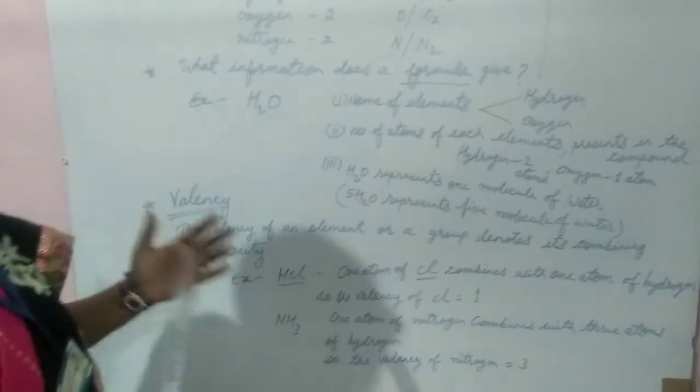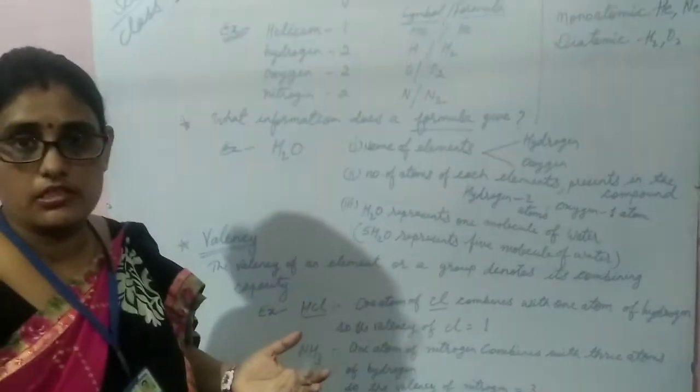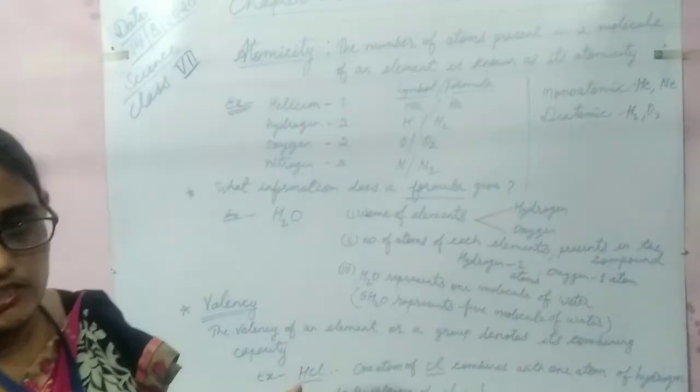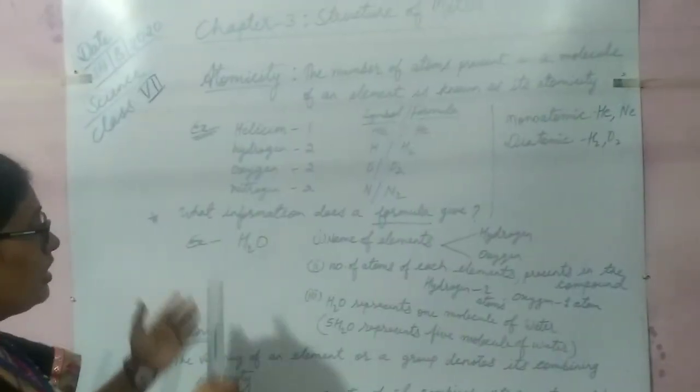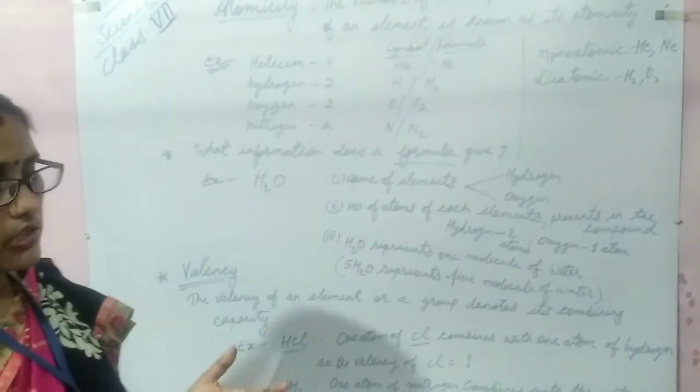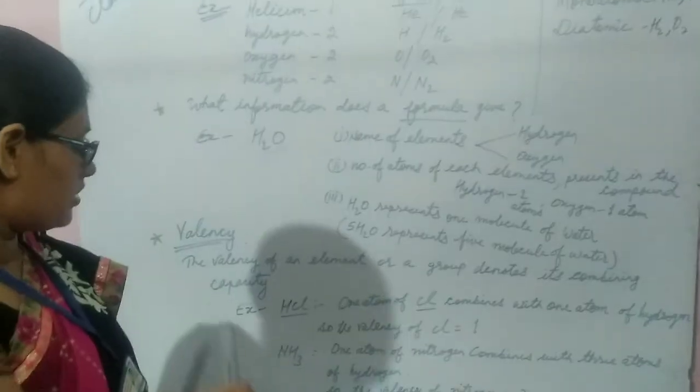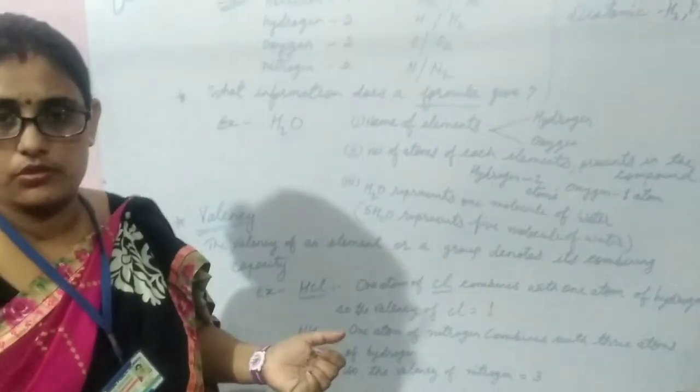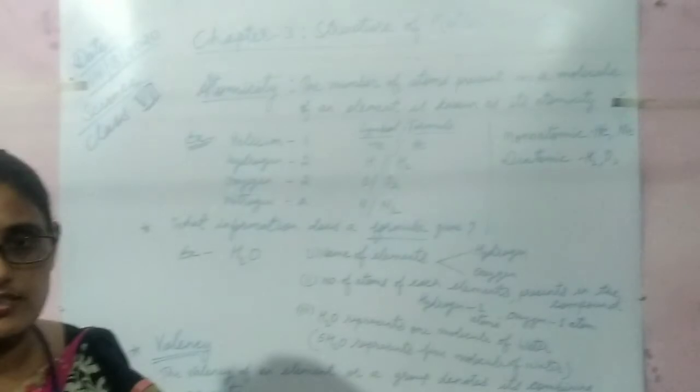So dear students, today I have explained atomicity, monoatomic and diatomic elements with examples, information from formulas, and valency. For more details, read table 3.7 from your science book. Have a nice day. Thank you.